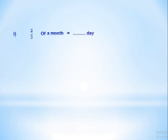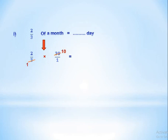Letter I: two-thirds of a month equals how many days? We know a month equals 30 days, and 'of' means multiply. So we calculate two-thirds of 30. Since 30 has no denominator, we write 30 over 1. We can simplify 3 and 30 — both in the 3 times table — by dividing both by 3: 3 divided by 3 equals 1, and 30 divided by 3 equals 10. Multiplying 2 times 10 over 1 times 1 gives 20 days.